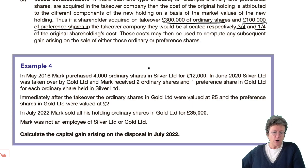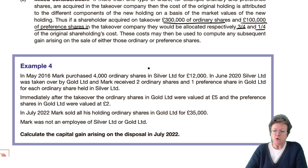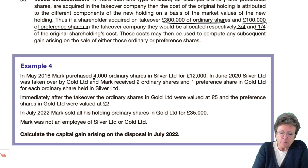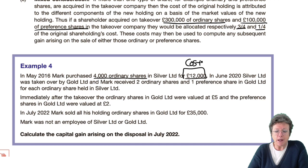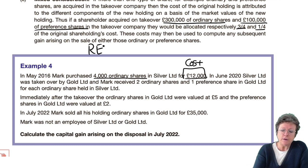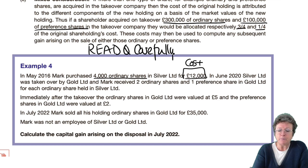So Mark in 2016 bought 4,000 shares in Silver for £12,000. In June 2020, Silver was taken over by Gold and Mark received two ordinary shares and one preference share in Gold for each ordinary share held. It's really important that you read the question carefully and then follow through with those steps. That's step one — what did he have — and step two — what did he get.